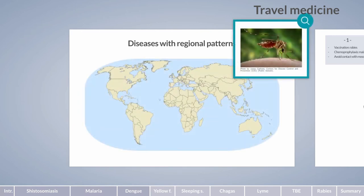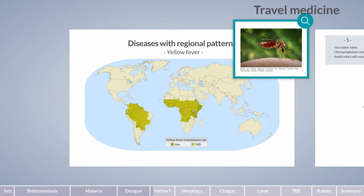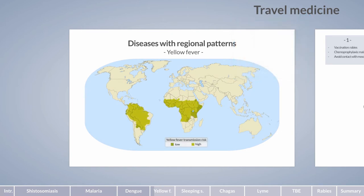Aedes mosquitoes are also involved in the transmission of yellow fever, another hemorrhagic fever. This disease is currently more localized than dengue fever and malaria. Most yellow fever infections occur in sub-Saharan Africa between 15 degrees north and 18 degrees south of the equator. Other risk regions include the tropical areas of northern South America, collectively referred to as the yellow fever belt.